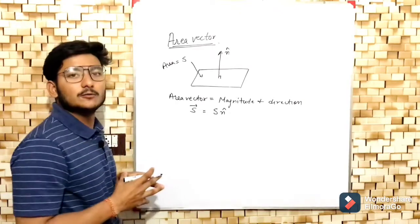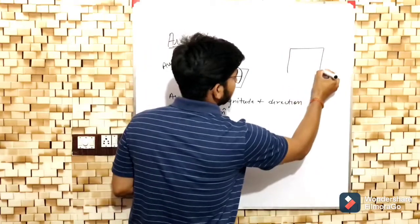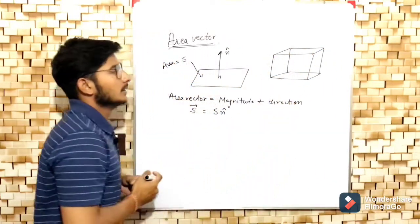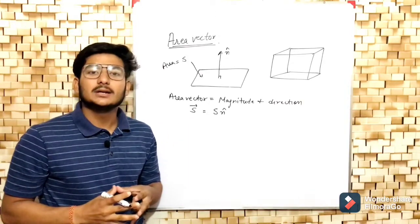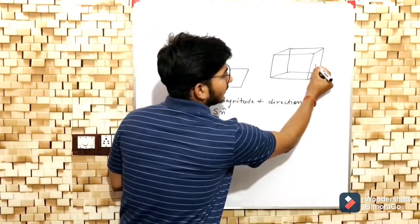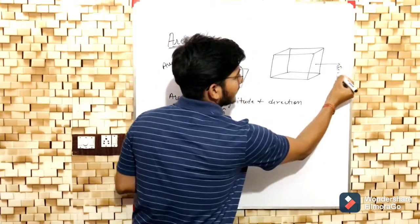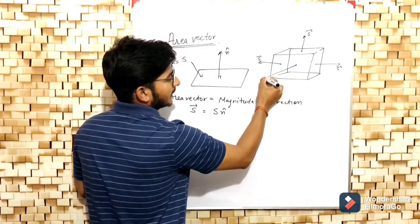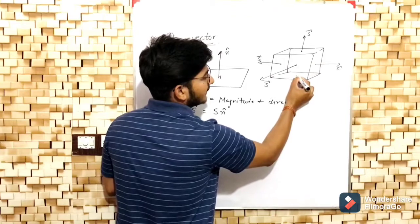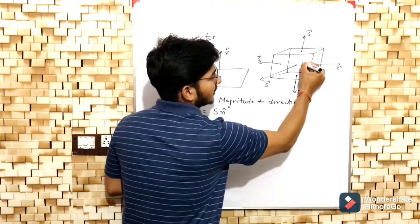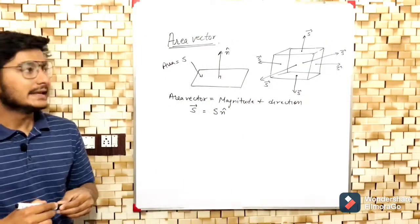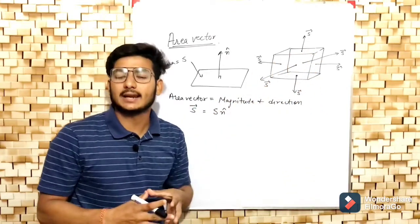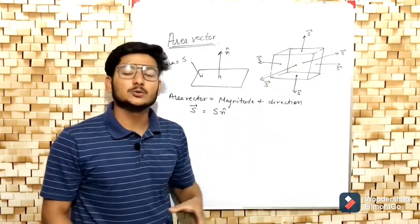Now, if your surface encloses a volume like this cube, then the area vector of each face is perpendicular in the outward direction. Each face's area vector points outward — this face in this direction, that face in that direction, perpendicular to each respective face. So area vector is always perpendicular to the face, and if the faces are enclosing a volume, the direction is outward from the enclosed volume.